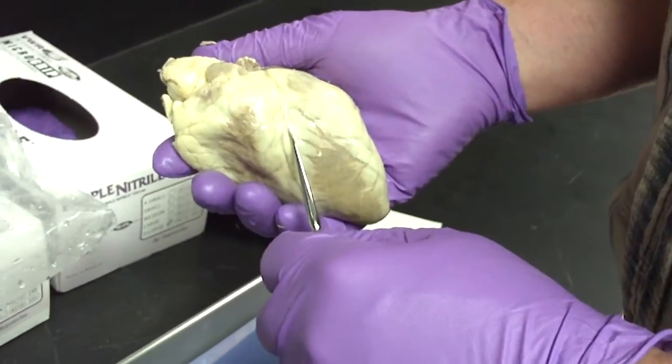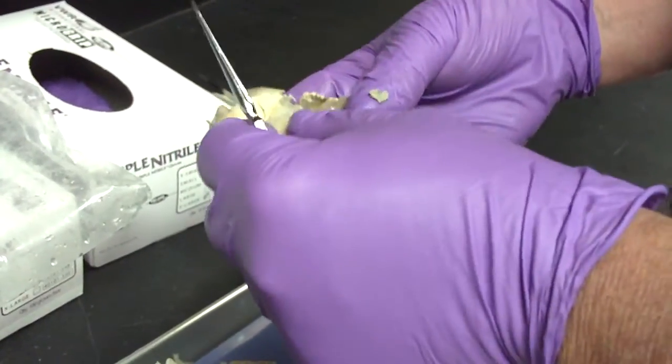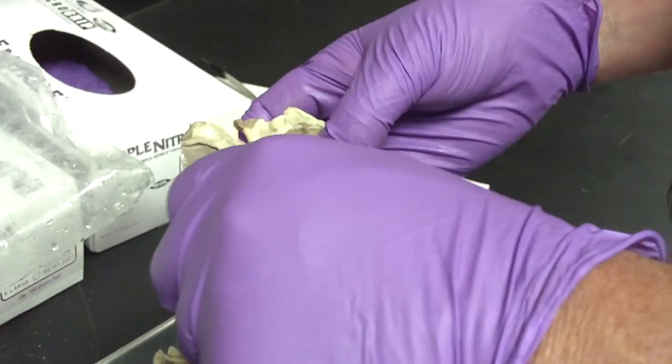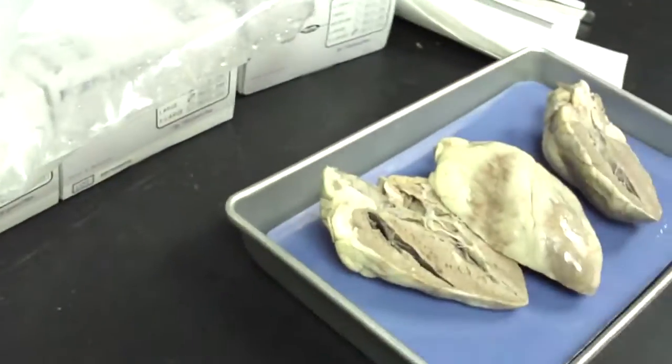There's the sulcus. There's the pulmonary trunk right there. That one's always easy to see because it kind of lays on the surface. Again, they cut the other direction. That is the aorta there, the big one. And let's look at this one over here.